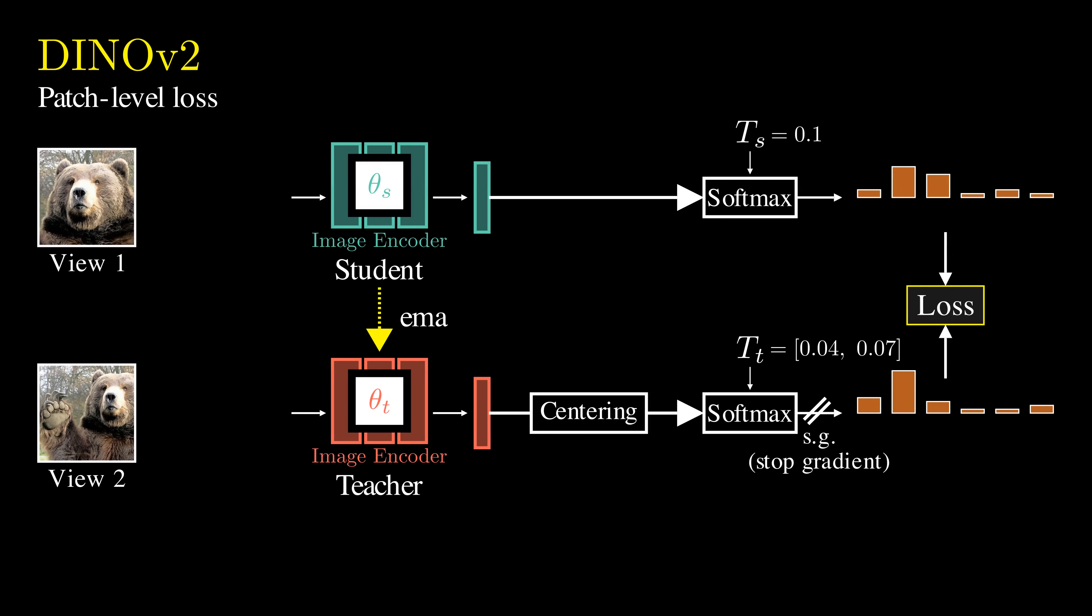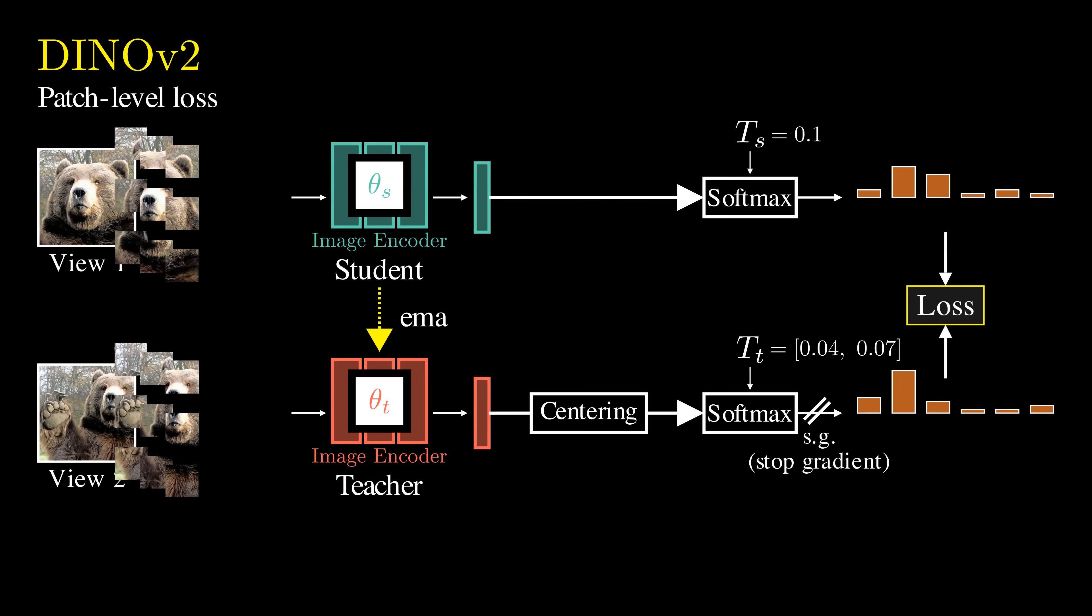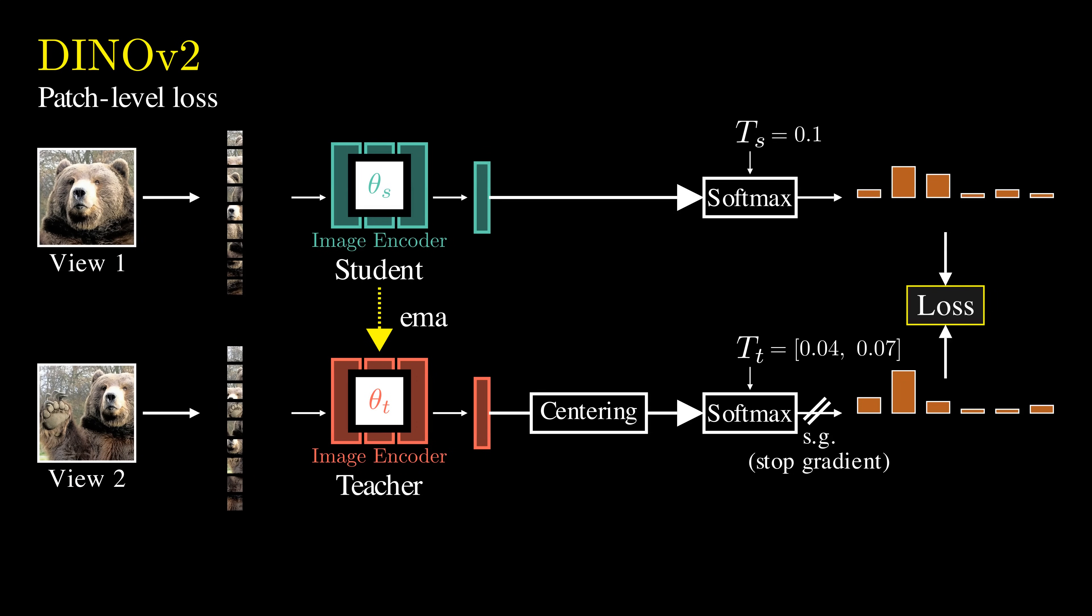Both the student and teacher models use a vision transformer as their image encoder. In other words, before feeding the image into our model, we first split the image into smaller patches. We prepend a special learnable class token to the sequence of image patches. The class token's features encode a summary of the whole image, capturing its global context. This is the feature we have been working with so far during the training of DINO.